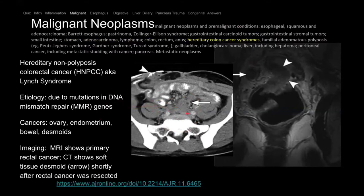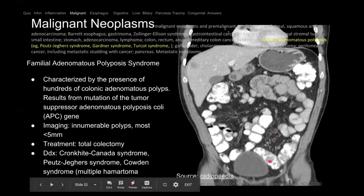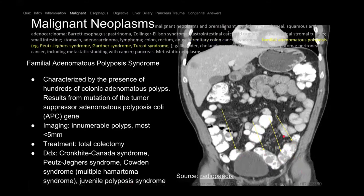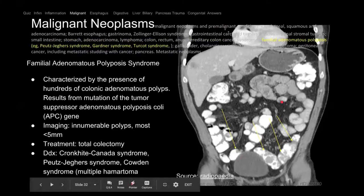Here we see little soft tissue nodules — filling defects — tons of polyps everywhere. This is FAP — familial adenomatous polyposis syndrome — due to APC gene mutation. Patients have a high risk of colon cancer transformation, so many get a prophylactic total colectomy.